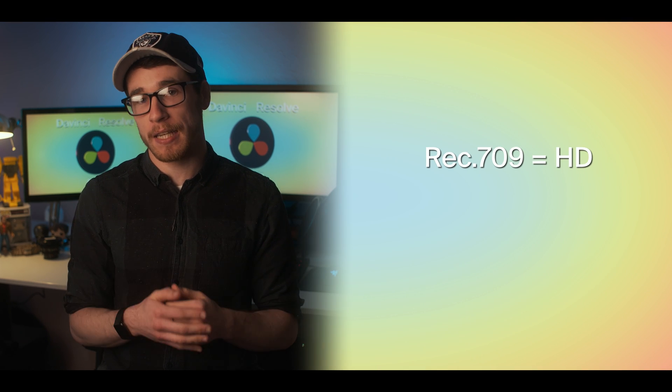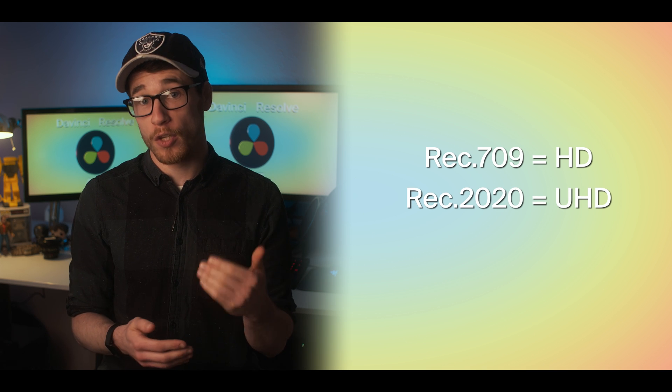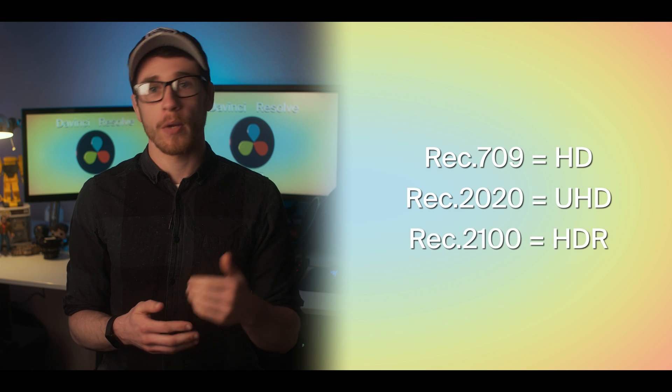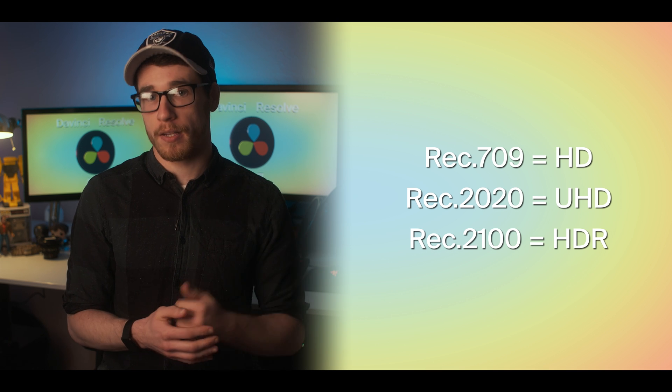The short answer to what each one is: Rec.709 is recommendations for HD delivery, Rec.2020 is recommendations for UHD delivery, and Rec.2100 is recommendations for HDR delivery. Each recommendation has definitions for color space, gamma, temporal resolution, spatial resolution, and bit depth.